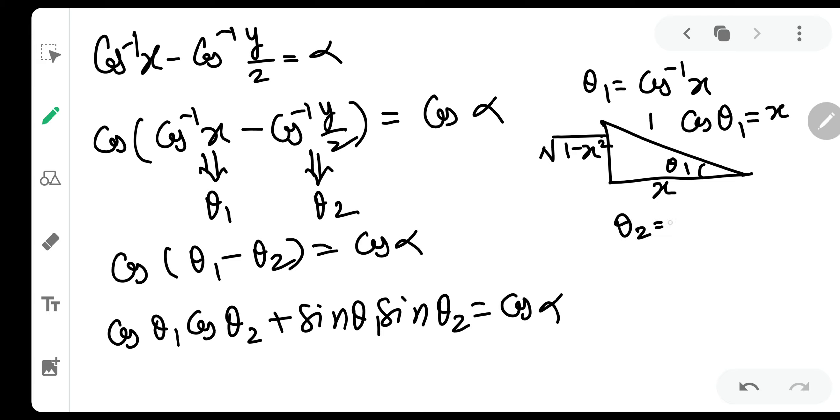Then theta 2 is equal to cos inverse y by 2. So let us make another triangle. Let us call this theta 2. Again, adjacent by hypotenuse y by 2 and 1. And this will be equal to 1 minus y square by 4. Again, by Pythagoras, I have calculated this. So simple.